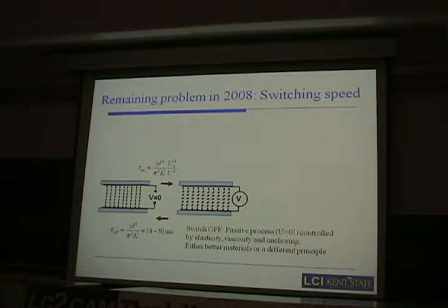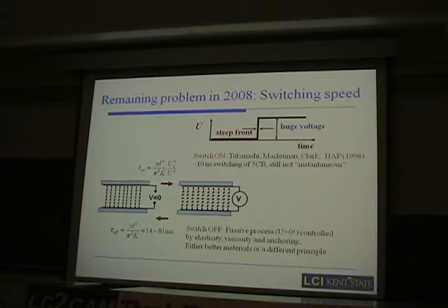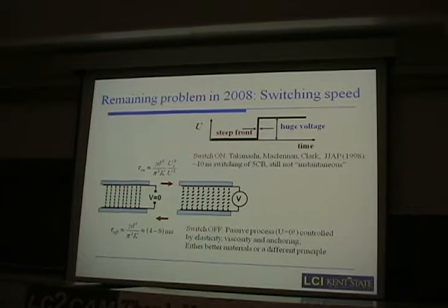It's not clear how to improve tau_off since it doesn't depend on applied field. For the turn-on direction, one can simply increase voltage. About ten years ago, Tekanoshu, McClellan, and Clark demonstrated nanosecond-speed switching by using a special driving scheme with a very steep voltage front on the typical material 5CB. They achieved about 10 nanoseconds of switching, but the material response did not follow the applied pulse shape perfectly. They suggested that dielectric dispersion and dielectric heating might be involved.